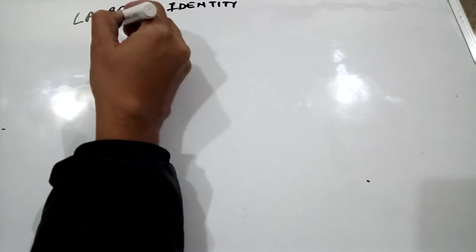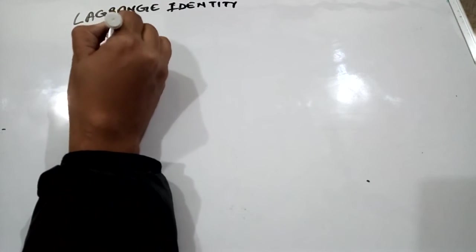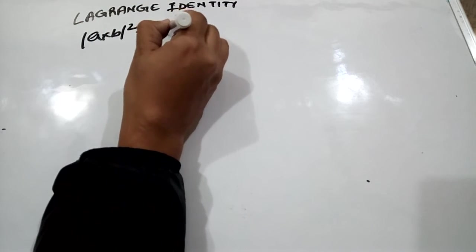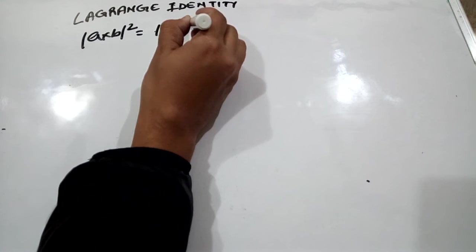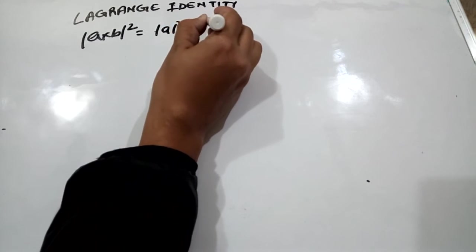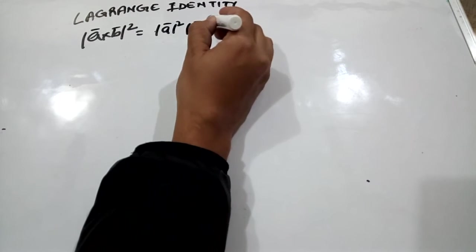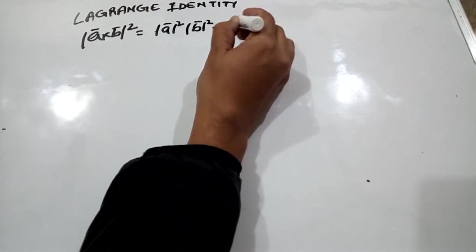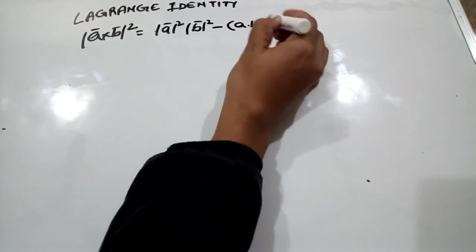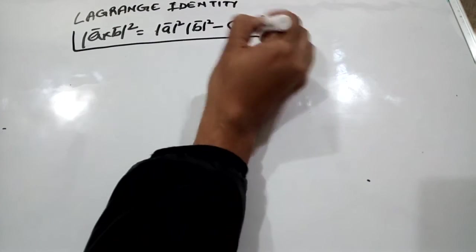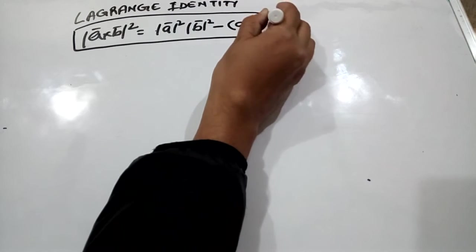The identity says a cross b whole square is equal to mod of a square mod of b square minus a dot b square. This is the Lagrange identity.